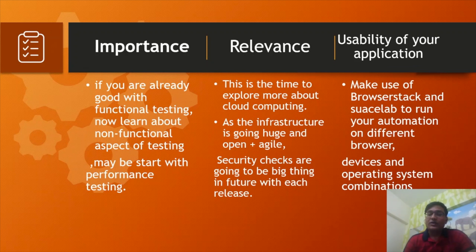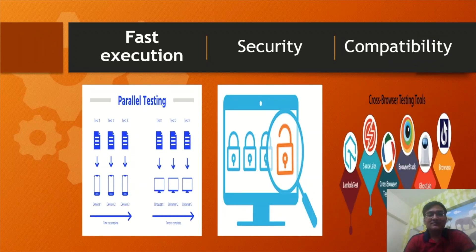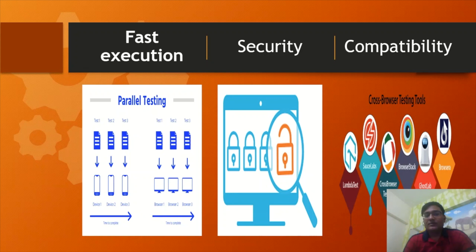As the infrastructure is going huge and open, agile security checks are going to be a big thing in future because you want to check with each release. You can make use of BrowserStack and Sauce Labs to run your automation on different browsers. You have to understand how you can set the usability of your application on different devices and operating systems to do faster execution, possibly in a parallel way.